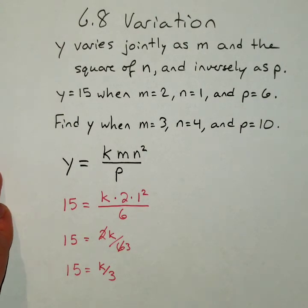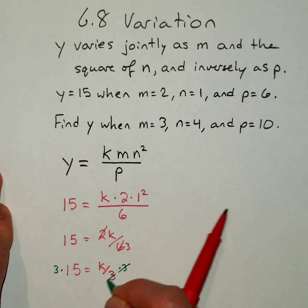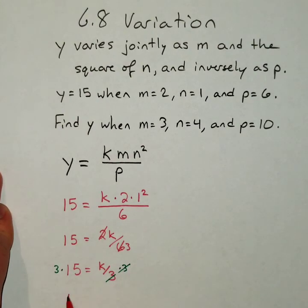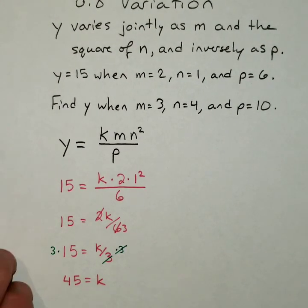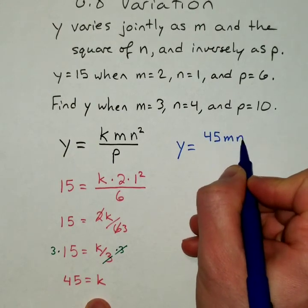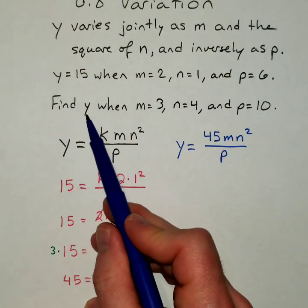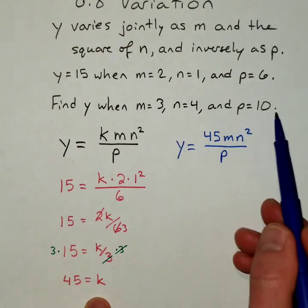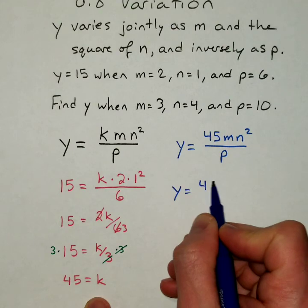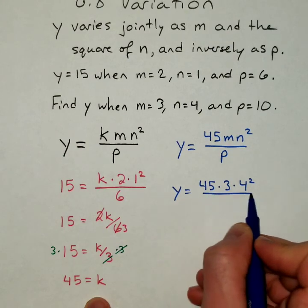And so to solve that, we can multiply both sides by 3. The 3s will cancel on the right. We're left with 45 is equal to k. So k is our value of 45. Now I go back and substitute that k back in. So I get y equals 45 times mn squared over p. And then the final line says find y when m is 3, n is 4, and p is 10. So we just plug those three values in.